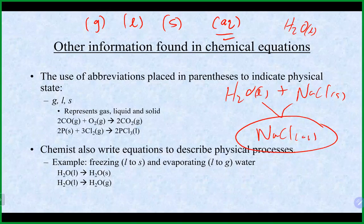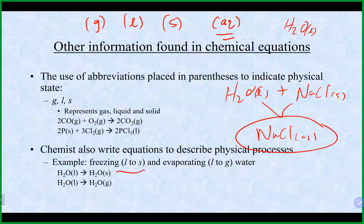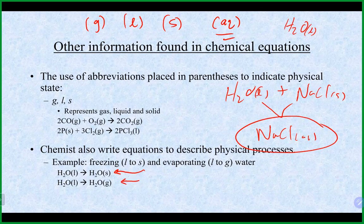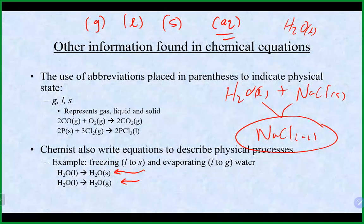We mostly write chemical equations for chemical changes, but we can also write them for physical processes. For example, liquid water freezing is written as H2O(l) → H2O(s), and liquid water heating to steam is H2O(l) → H2O(g). These are physical changes, but we can still represent them with equations. The vast majority of equations you see will involve chemical changes.